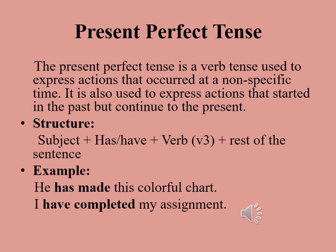Dear students, in your previous classes you have already studied about tenses. Tenses are of three types: present tense, past tense, and future tense. Present perfect tense is one of the types of present tense. Let us see in detail what is present perfect tense.